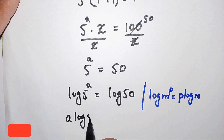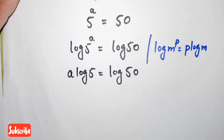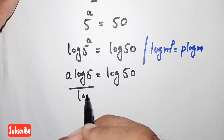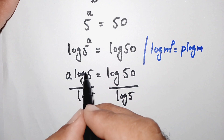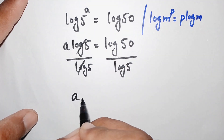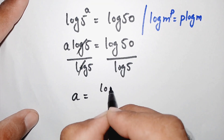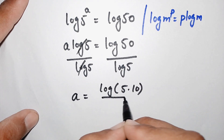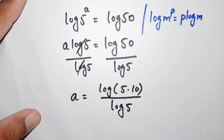Applying this rule, the power moves down: a times log of 5 is equal to log of 50. Now we divide both sides by log of 5. This log of 5 cancels, leaving a equal to log of 50 divided by log of 5. We can also write log of 50 as log of 5 times 10.